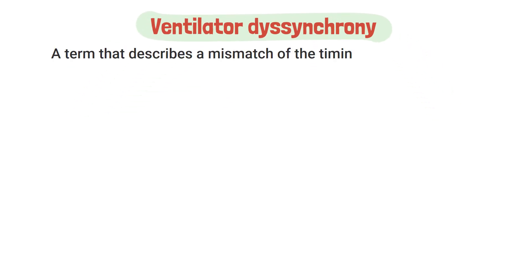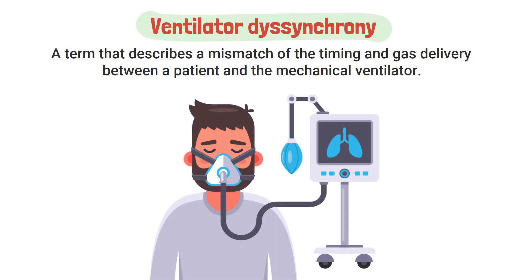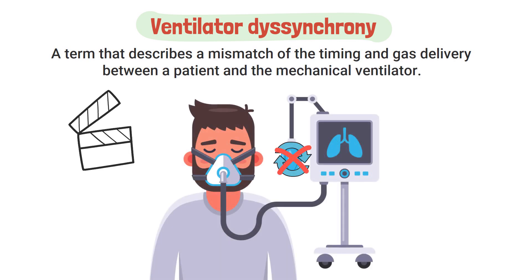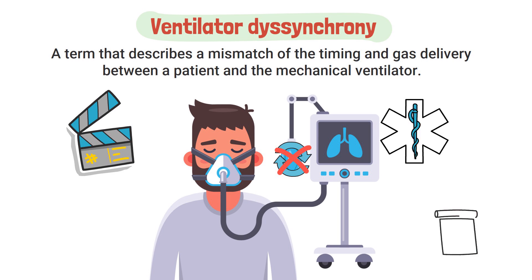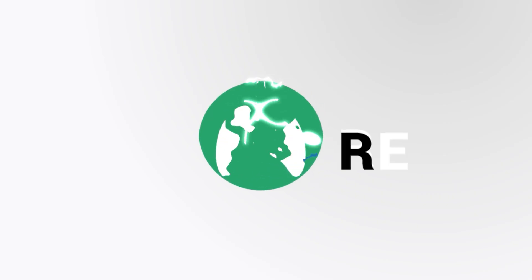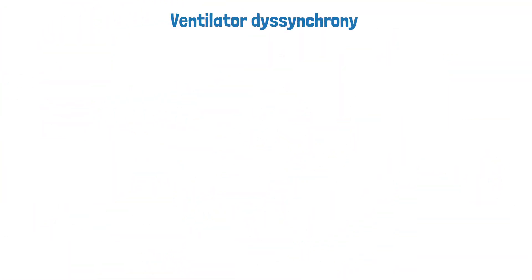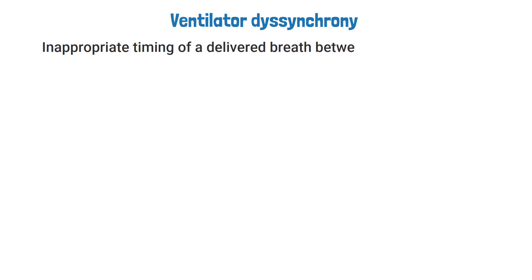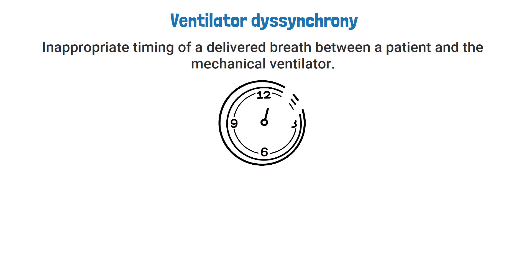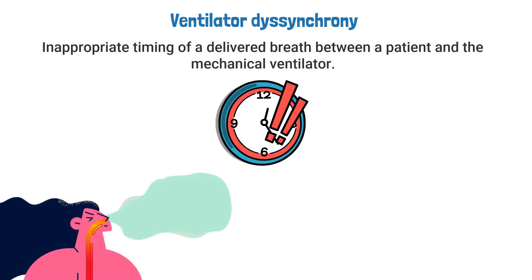Ventilator dyssynchrony is a term that describes a mismatch of the timing and gas delivery between a patient and the mechanical ventilator. It is characterized by inappropriate timing of a delivered breath between a patient and the mechanical ventilator, which increases work of breathing and makes it more difficult for the patient to breathe comfortably on the machine.